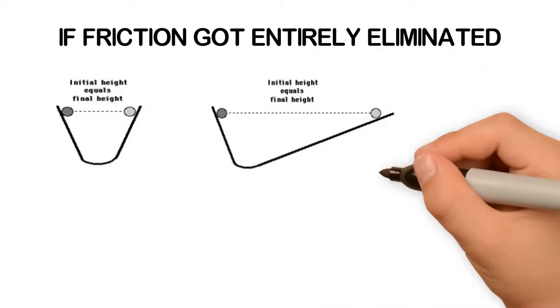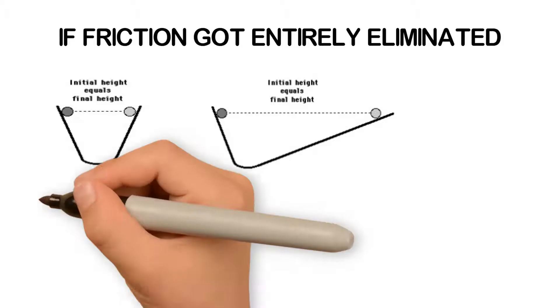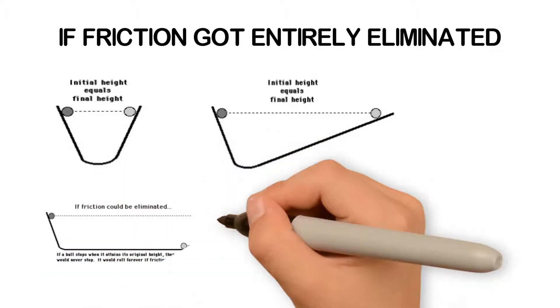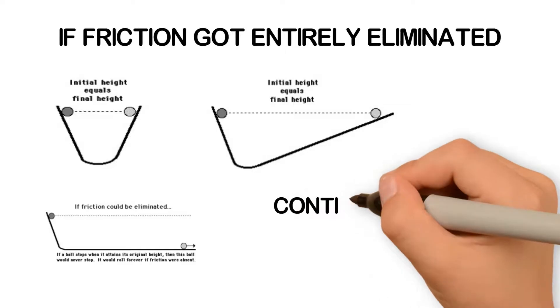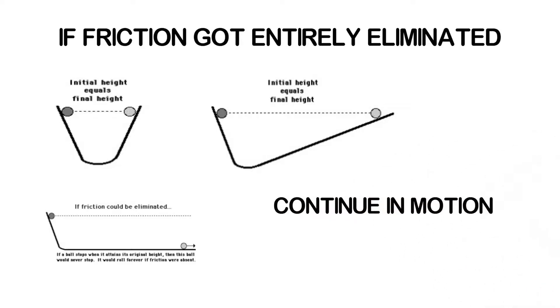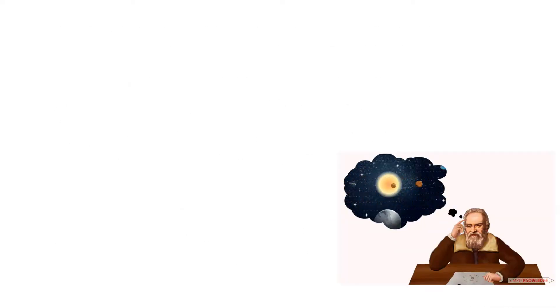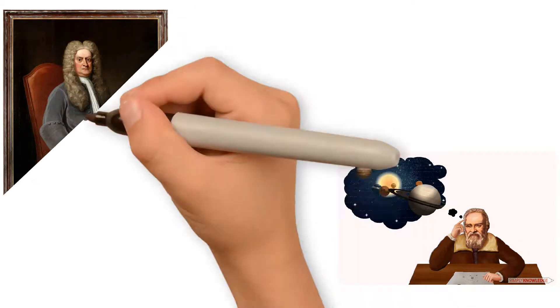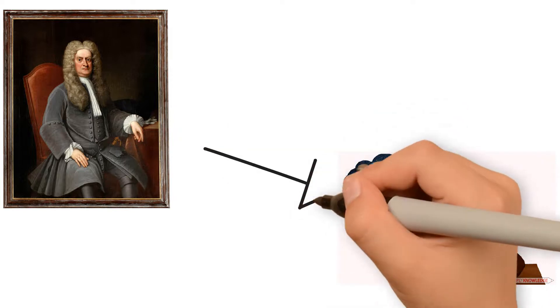No matter what angle you take for the other slope, if you take one of the slopes flat, then the ball would roll almost forever in an effort to reach the original height. So this theory of Galileo was refined by Newton. We can say that Newton's first law is a restatement of what Galileo had already described.